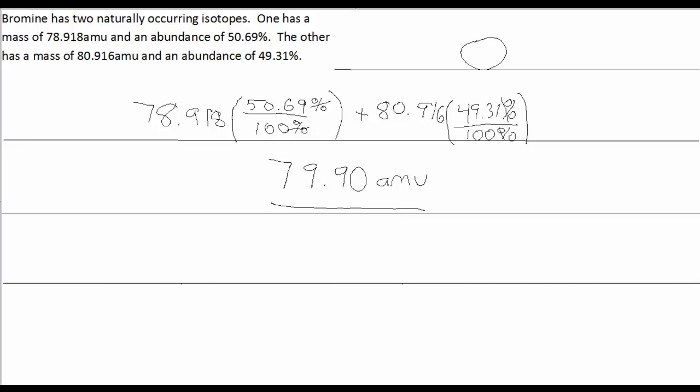I want to point out something else regarding percent abundances and the answer we've got. One of the isotopes weighs 78.918, and let's just round that off to 79. The other isotope weighs 80.916, and let's just round that off to 81.